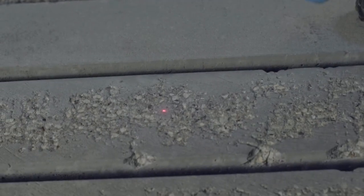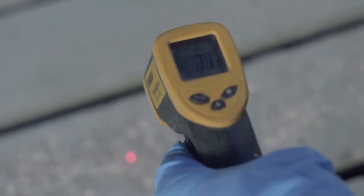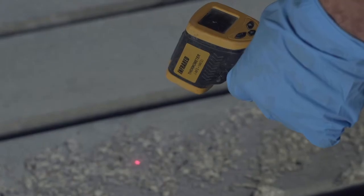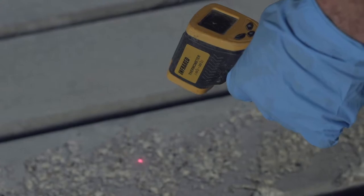The first step is to check the surface temperature of the trough using a thermometer. Air temp and surface temp are not the same thing. The concrete temperature can be much different than the air temperature.